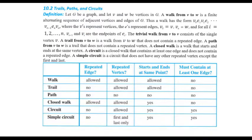E_i is incident on the vertex before it, which is V_{i-1}. A trivial walk from V to V consists of a single vertex V — just that single vertex with no edge. That single vertex also creates a walk, called a trivial walk.